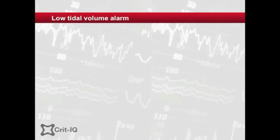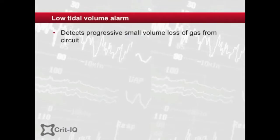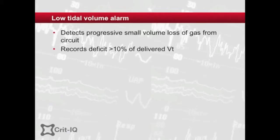Volume and minute volume alarms are designed to measure more subtle loss of gas from the ventilator circuit–patient system. Usually they are set to record a deficit in expiratory volume from inspiratory volume of greater than 10%. These alarms will be triggered by smaller leaks than pressure alarms. Examples include a leak around an under-inflated cuff, through an access port in the system, and from suctioning.